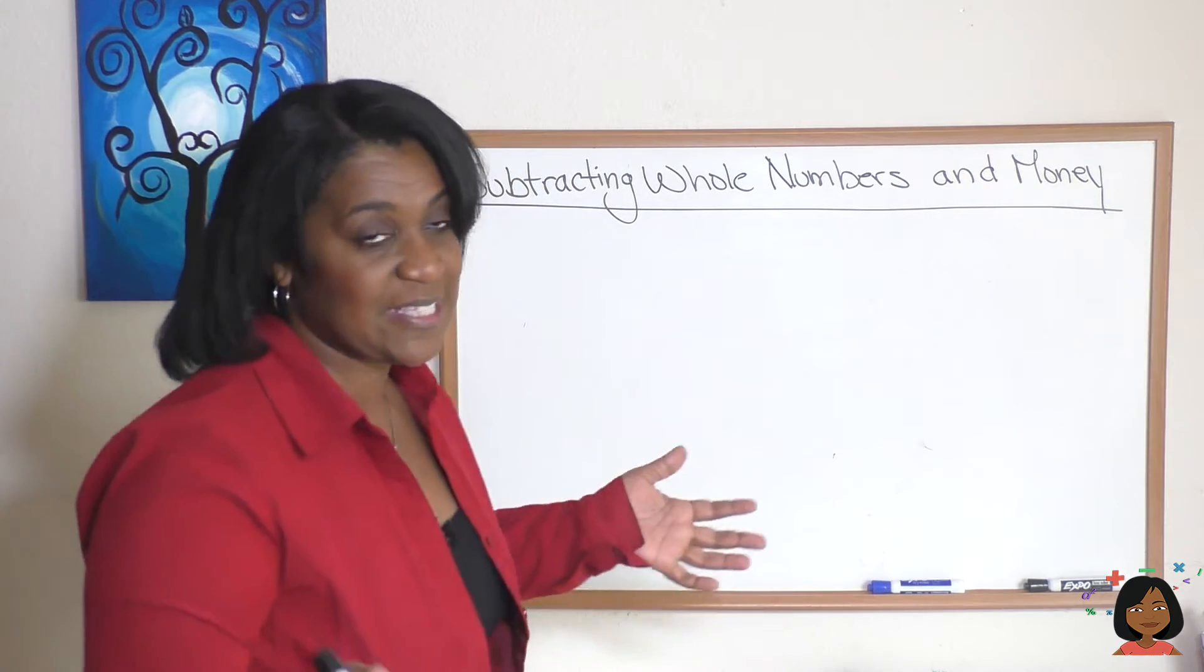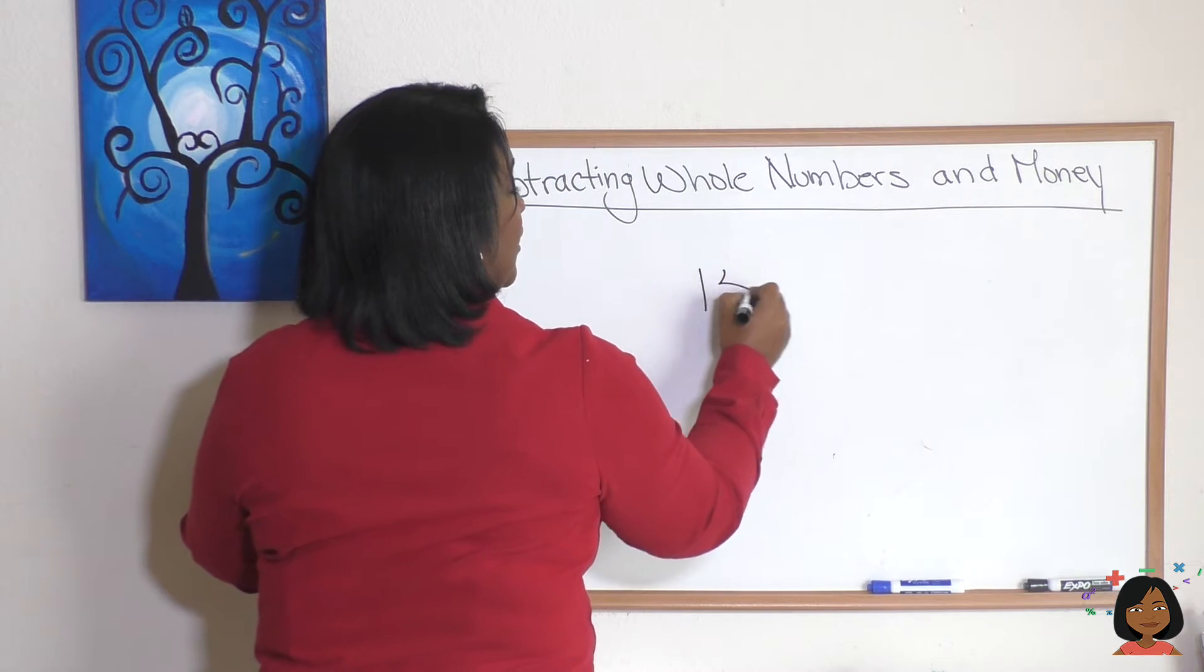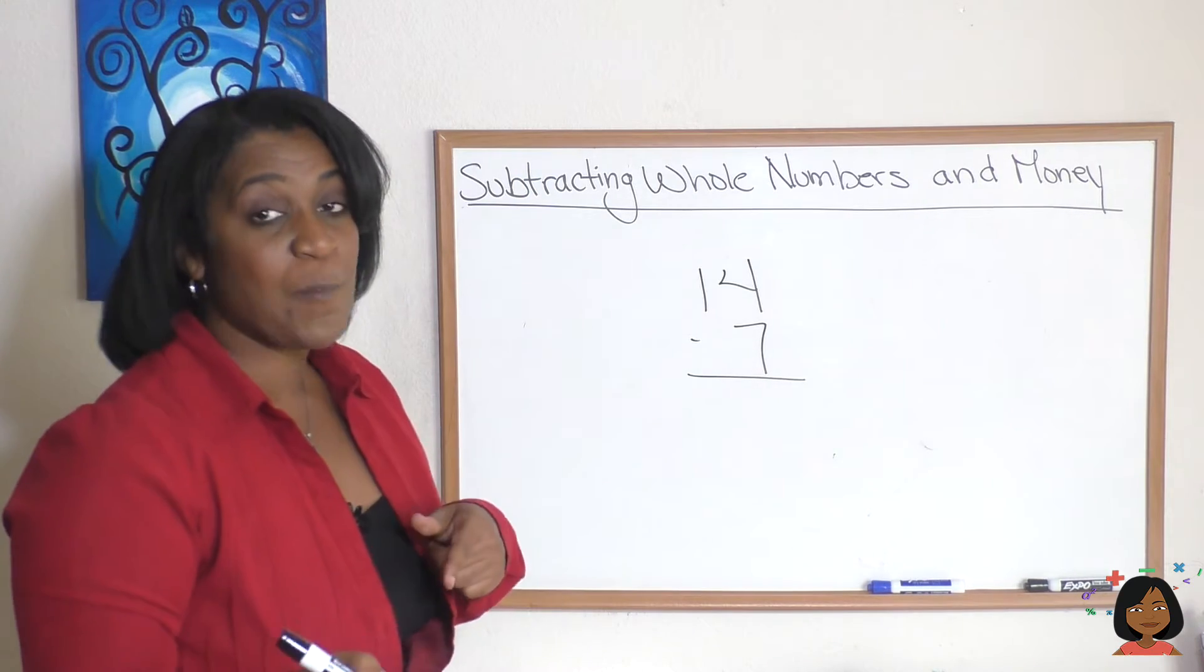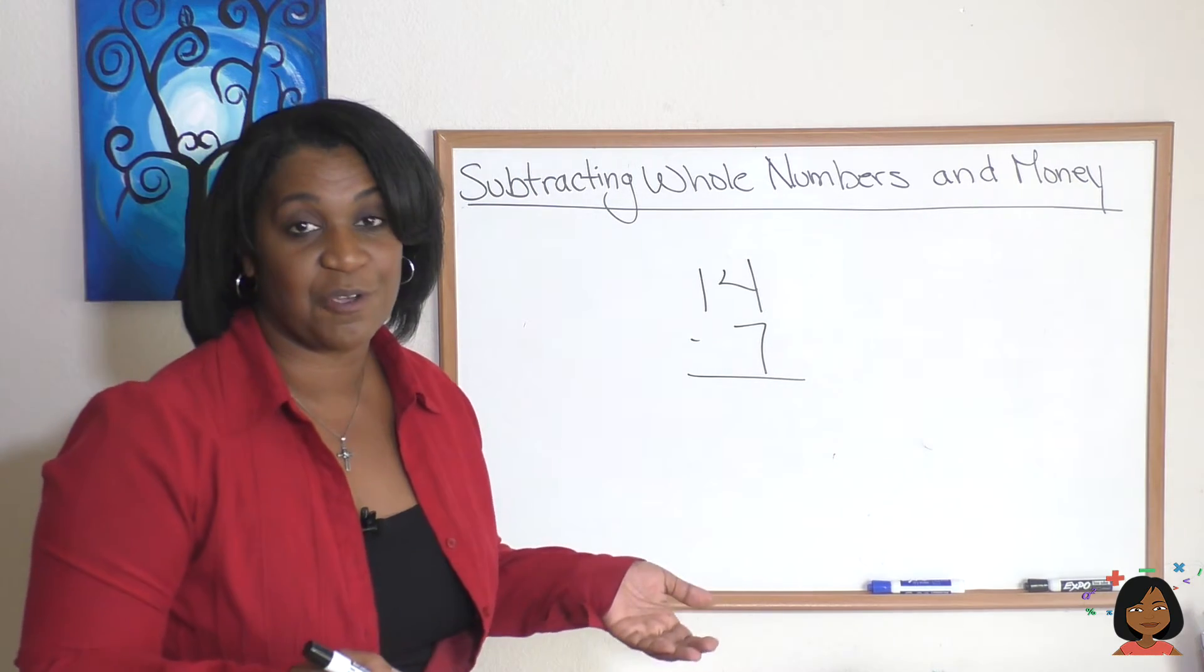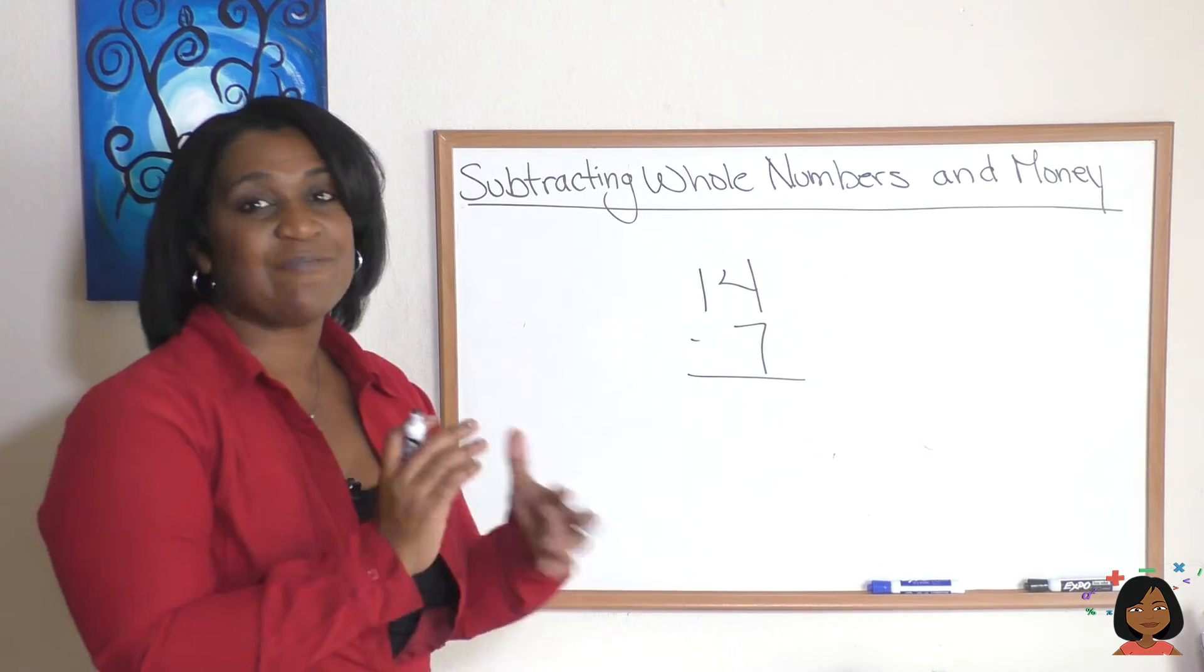I'm going to pick some easy numbers to start with, how about 14 minus 7. Before I do the math, I'm going to introduce some definitions to you, so in subtraction these two numbers have different names.